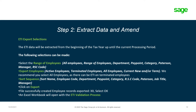We recommend that you select all employees, as there can be ETI on terminated employees as well. You also have an option for sort sequence — sort according to name, employee code, department, pay point, category, RSC code, Paterson, or job title manager. Click on export. A message will confirm the file was successfully created with the employee record export. Select OK.